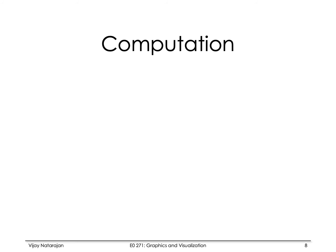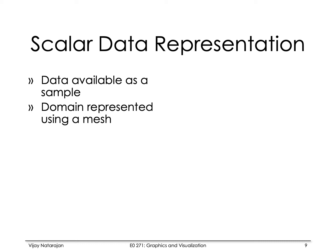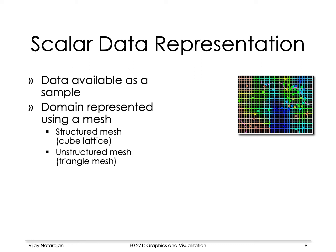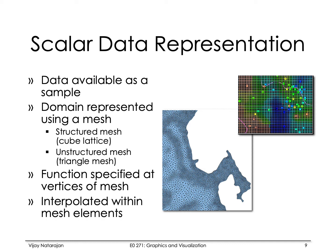Before computing an isosurface I need to know how the data is available to the algorithm. The scalar field is available as samples over a domain. The domain is represented using a mesh, which could be a structured or cube grid, or it could be an unstructured mesh where the domain is represented as a collection of triangles. The function is specified at vertices of the mesh in both cases and is interpolated within the mesh elements - linear or bilinear in 2D, linear or trilinear in 3D in the case of a cube grid.